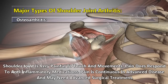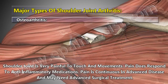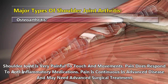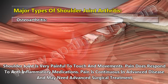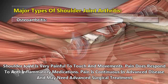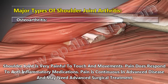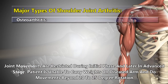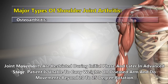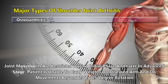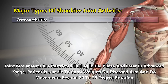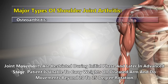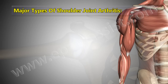The shoulder joint is very painful to touch and movement. Pain responds to anti-inflammatory medications but is continuous in advanced disease and may need surgical treatment. Joint movements are restricted during the initial phase, and later in the advanced stage the patient is unable to carry weight on the affected arm or move beyond 20 to 25 degrees of rotation.